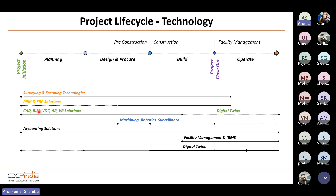When all BIM and CAD work is put together as one model and handed over to the client for facility management, it becomes a digital twin. We also have machining, robotics, and surveillance. Robotics is being used where human risk is high, and drones are used on site and post-construction for surveillance. Accounting solutions exist, and facility management solutions have evolved from no-CAD to CAD-powered to BIM-powered, and now digital-twin-based FM.